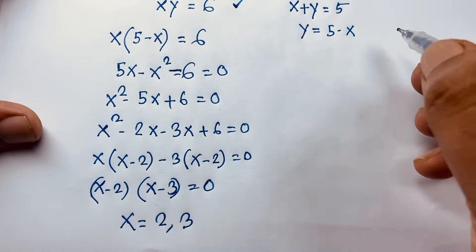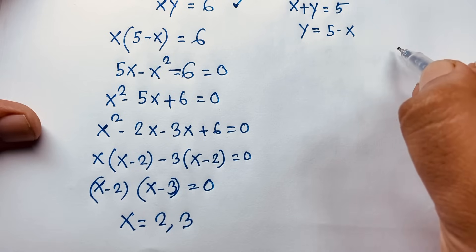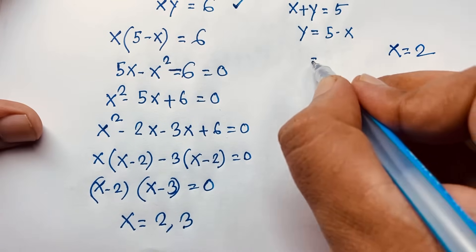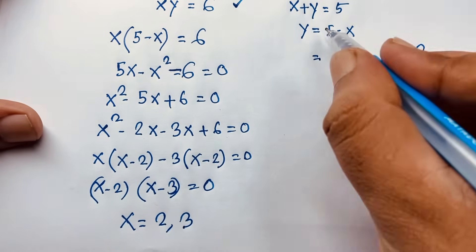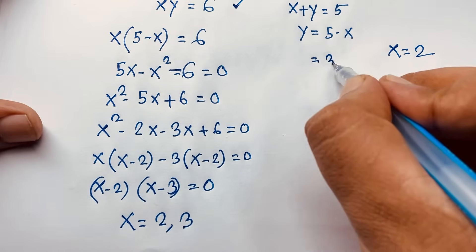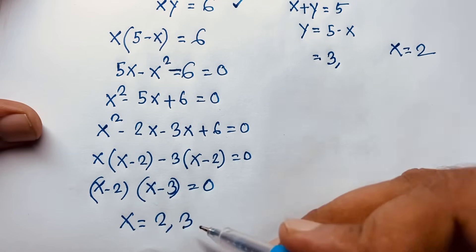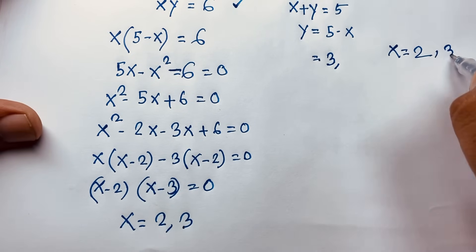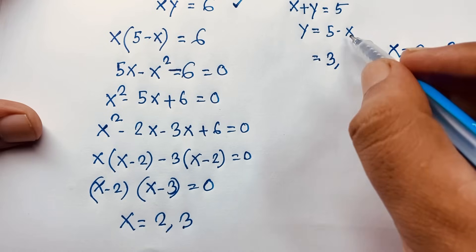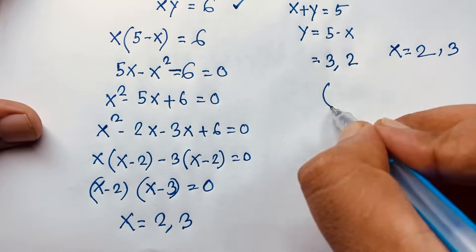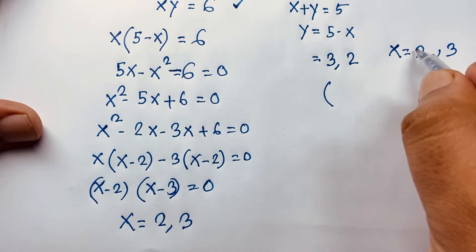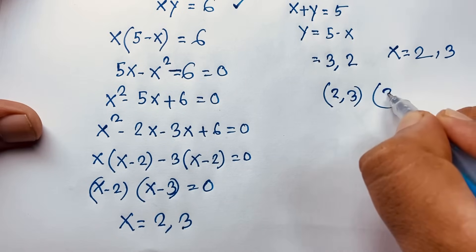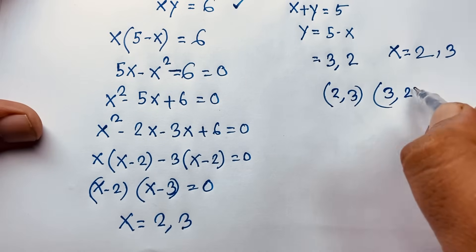So x equals 2 or x equals 3. When x equals 2, y equals 3; when x equals 3, y equals 2. These are our two solution pairs.